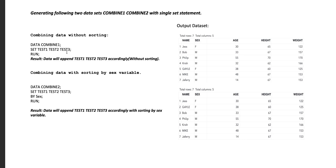That means the datasets are appended one after another. As a result, we obtain seven rows: the first four rows from test one, two rows from test two, and the last row from test three.